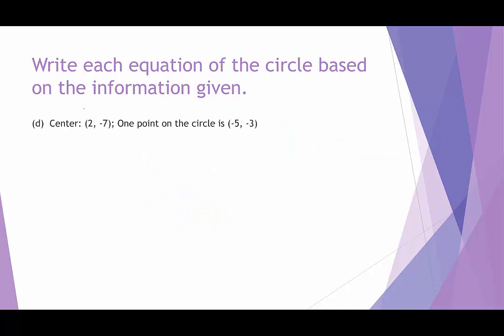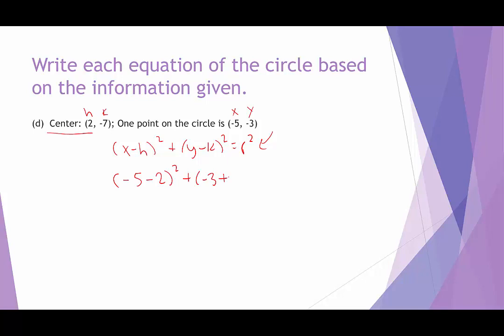In this example, we're again given the center as h, k, and told one point on the circle is negative 5, negative 3 — our x and y. We use the same technique: plug into the circle formula to find r squared. That gives us: negative 5 minus 2 squared plus negative 3 minus negative 7 — which becomes plus 7 — squared equals r squared. Negative 5 minus 2 is negative 7, and negative 3 plus 7 is 4.